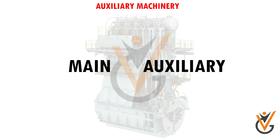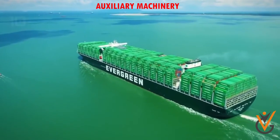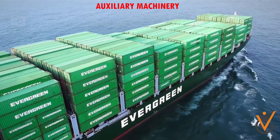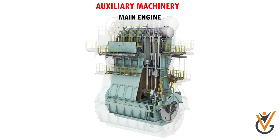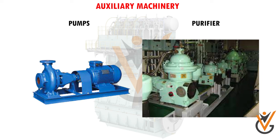Difference between the terms main and auxiliary. The main purpose of a merchant ship is to move cargo from one place to another. The machinery that achieves movement of the ship is thus termed the main engine. However, we require other machinery such as pumps and purifiers to be able to operate the main engine. These other machines necessary for the function of the main engine are called auxiliary machinery.